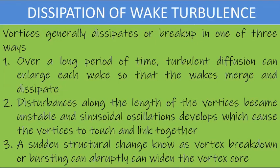Vortices generally dissipate or break up in one of three ways. First, over a long period of time, turbulent diffusion can enlarge each wake so that the wakes merge and dissipate. Second, disturbances along the length of vortices become unstable and sinusoidal oscillations develop, causing the vortices to touch and link together. Third, a sudden structural change known as vortex breakdown or bursting can abruptly widen the vortex core.